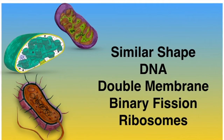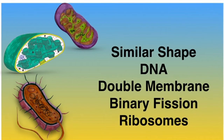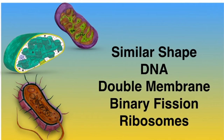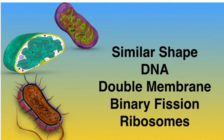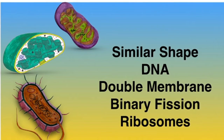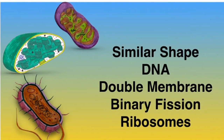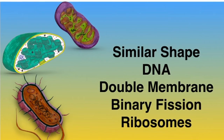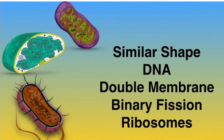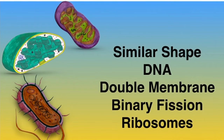Comparing the mitochondrion, the chloroplast, and the bacterium, you'll notice many similarities — for example, a very similar shape. The DNA is very similar in how it's arranged. Also, why do mitochondria and chloroplasts have a double membrane? All three reproduce by means of binary fission, and all three contain similar-sized ribosomes.